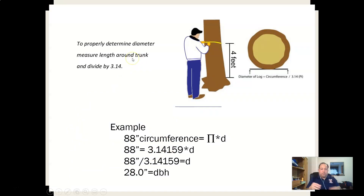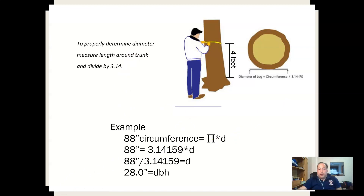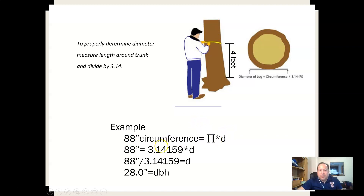Going through how the tape works: when someone wraps their tape around a tree, they'll see 28 inches. What the tape actually did was wrap around and measure 88 inches of circumference — but because the tape is already divided by pi (3.14159), what they see on the tape reads 28 inches.